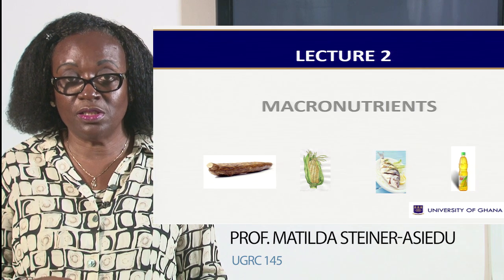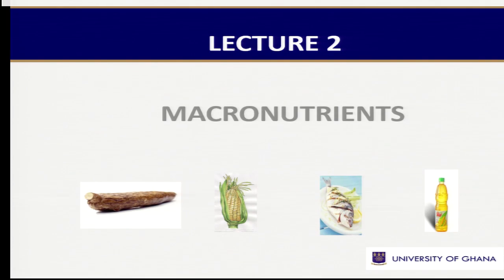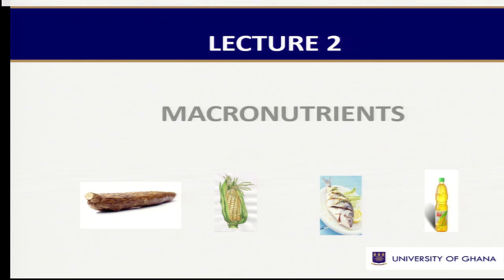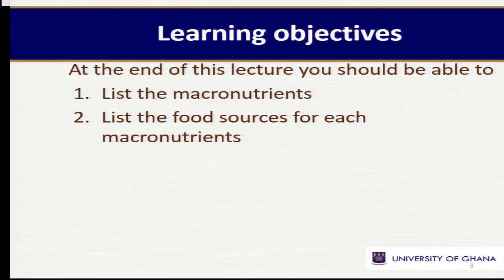That is why you see the cassava and maize there — that is from carbohydrates — and then the fish is from protein, and then the bottle of oil there from fats. So our three groups for the macronutrients are carbohydrates, proteins and fats, and remember we eat first and foremost to satisfy energy needs.